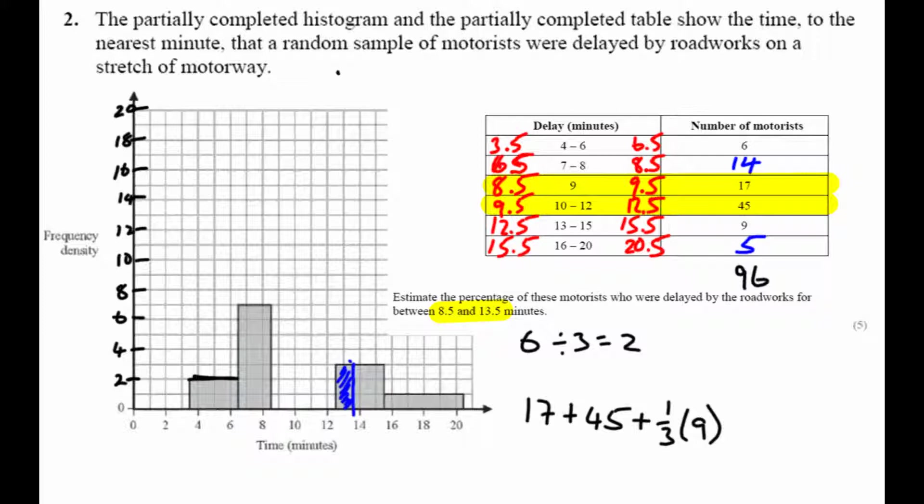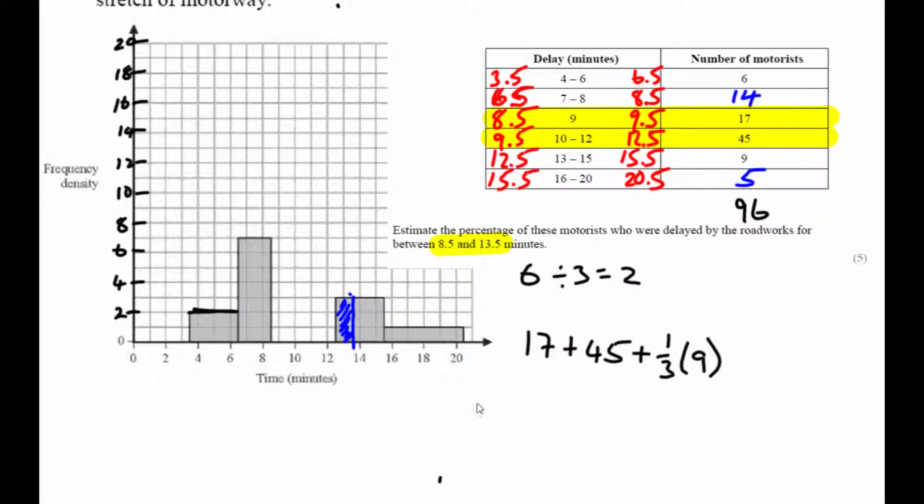And I want to know what is that as a percentage of 96. So adding those together, I'm going to get 65, and so I'm looking at 65 over 96. As a percentage, we'll use the calculator to do that, and we're looking for 67.71%.